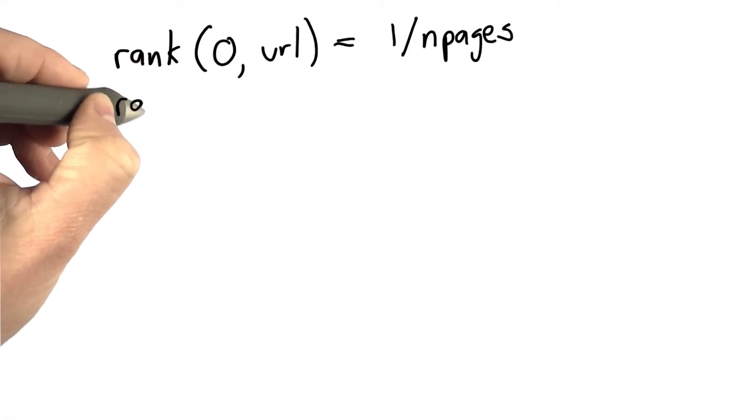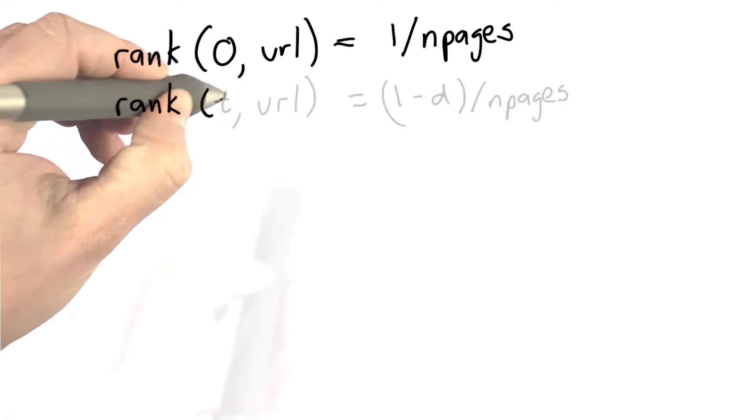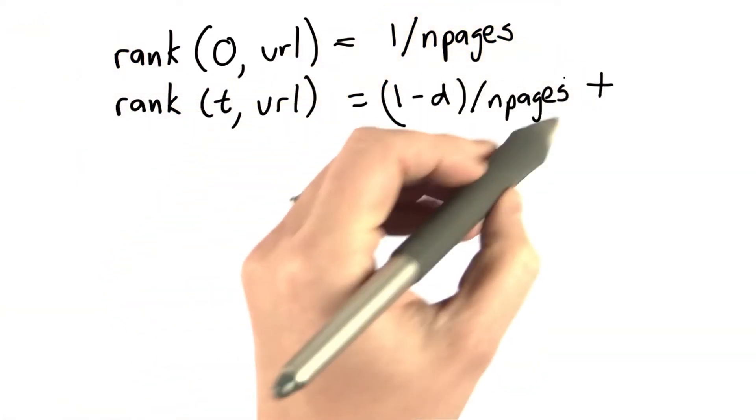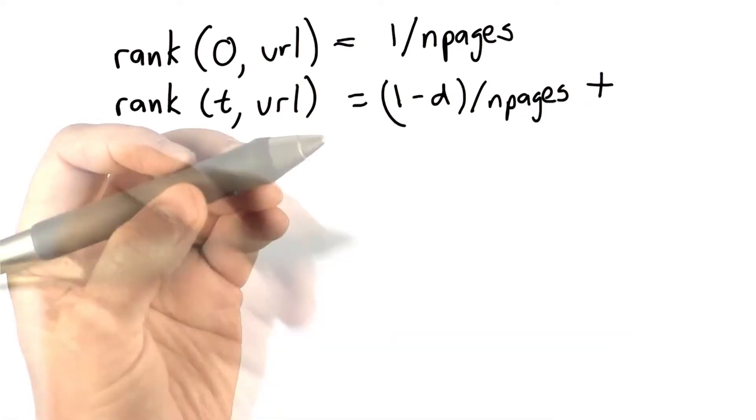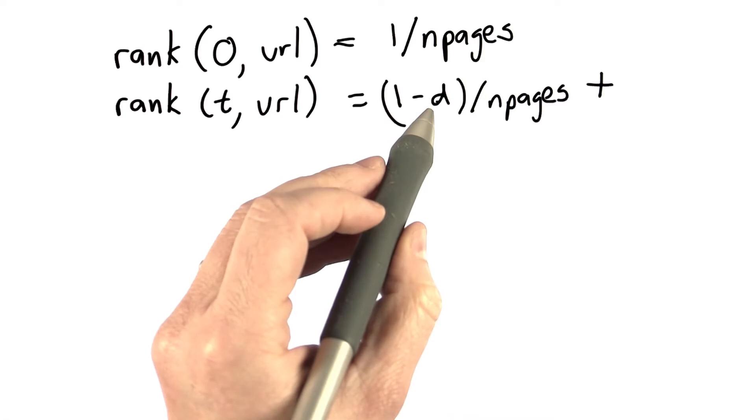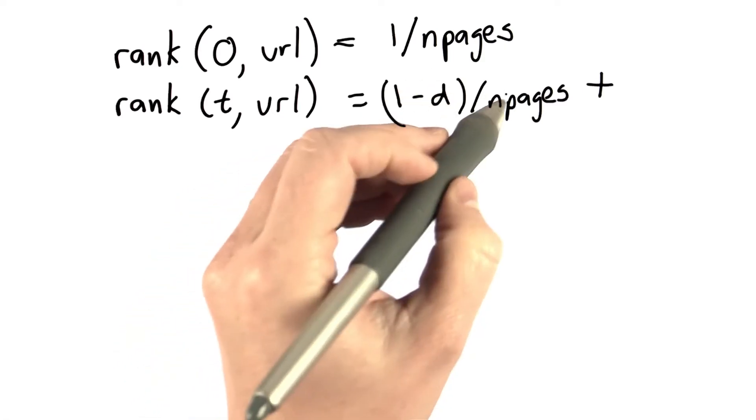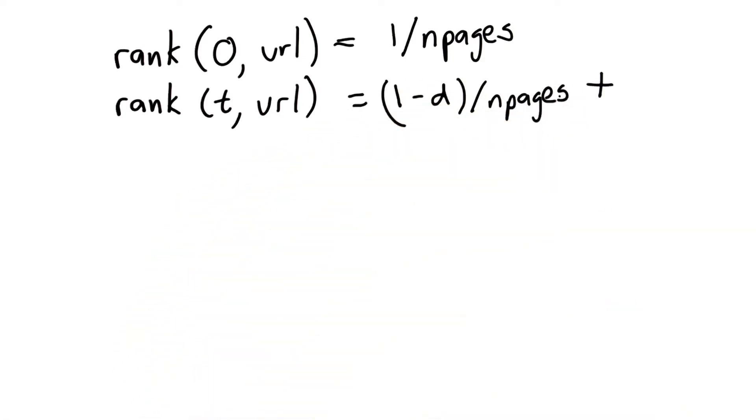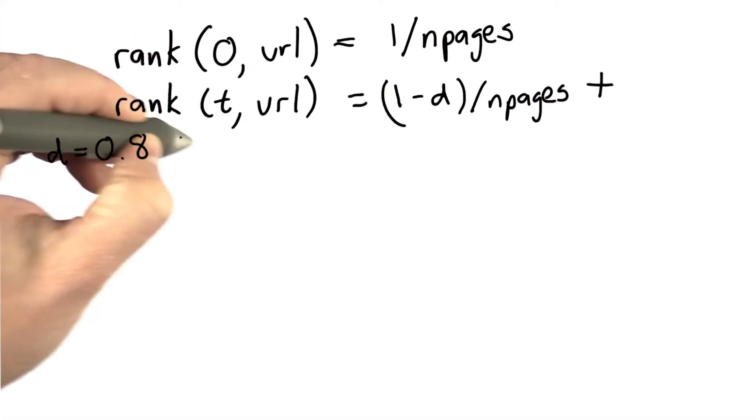And we updated the rank at time step t by adding the probability that the random surfer starts over and randomly picks that page. So that's 1 minus d, the probability of starting over, divided by nPages. And remember that d is our damping constant, and we'll decide that d is 0.8.